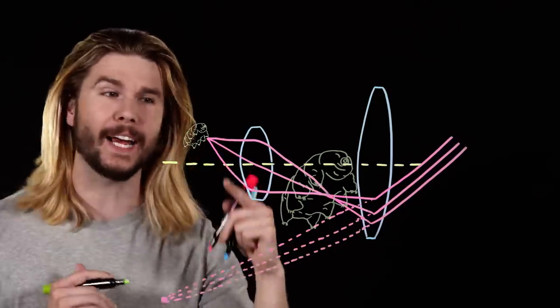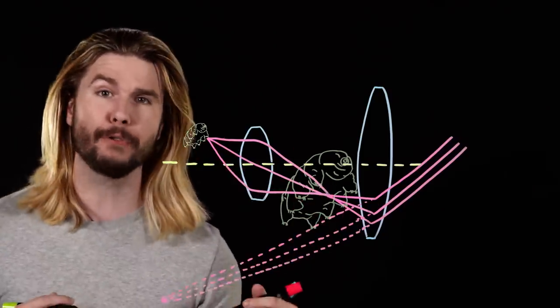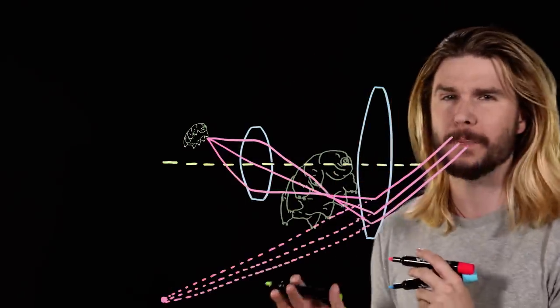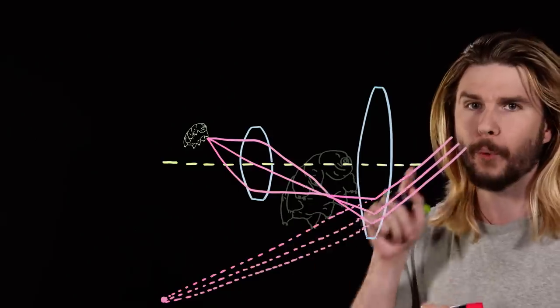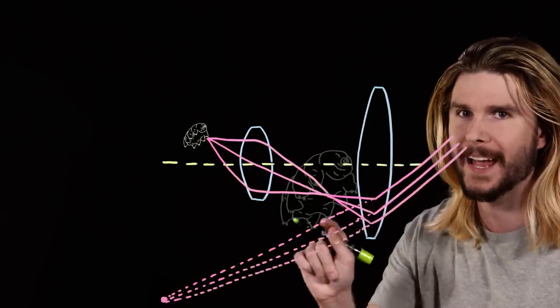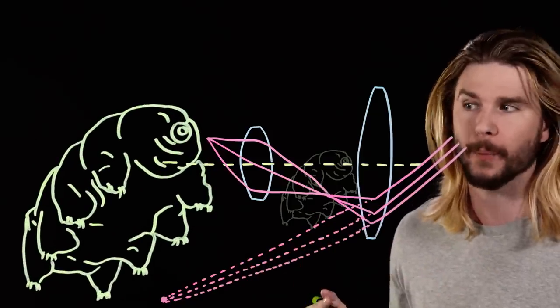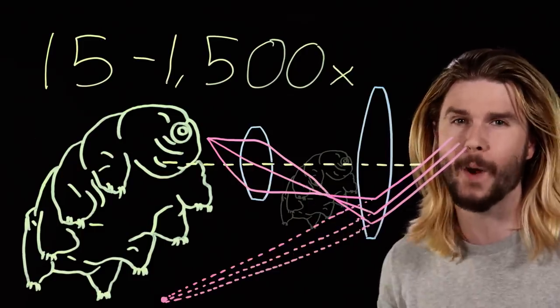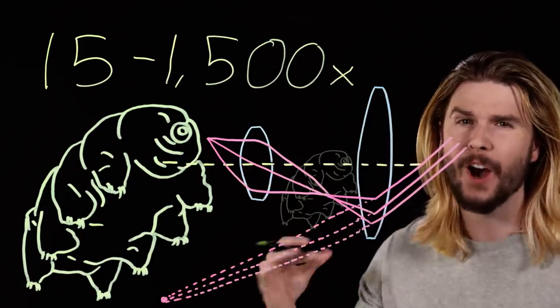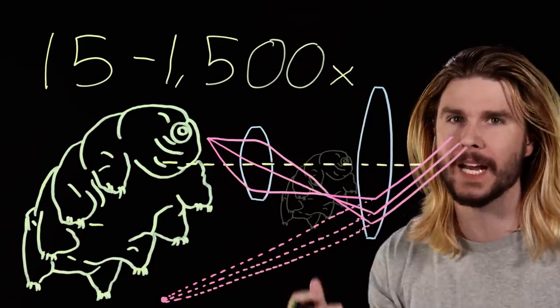When the light finally reaches your eye after going through the last lens of the microscope, you can see that it has been bent in such a way that your brain actually interprets it as though there is something much larger on the other end of your microscope. Our best optical microscopes that work in this way can magnify images tens, hundreds, even over a thousand times.